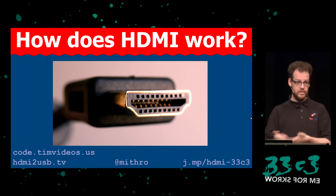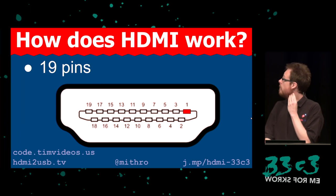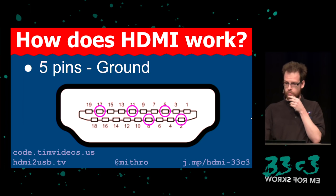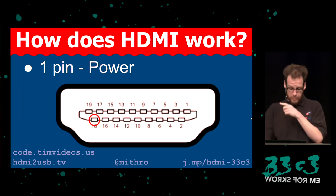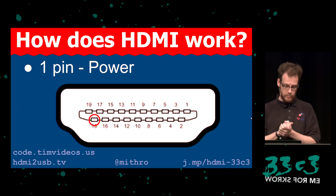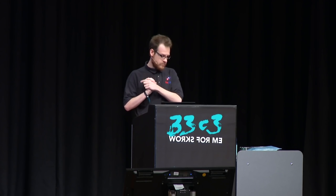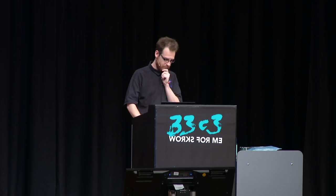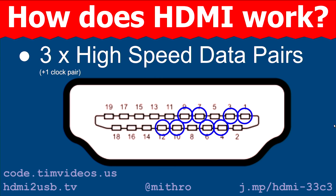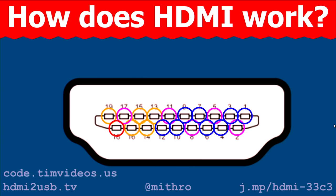This is an HDMI connector. If you look closely, you'll see that there are 19 pins on the HDMI connector. There are five pins used for ground, one pin used for power giving five volts at 50 milliamps. Some Chinese devices try to draw an amp from this — that's not good. There are three high-speed data pairs which transmit the actual video data sharing a clock pair. And then there are five pins used for low-speed data. To understand HDMI, you actually need to understand a whole bunch of different protocols — some low-speed and some high-speed.